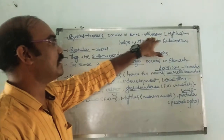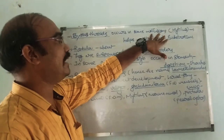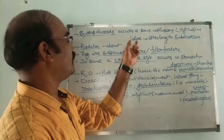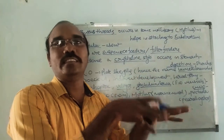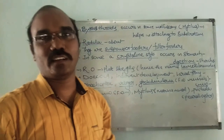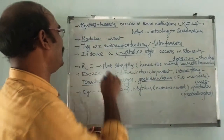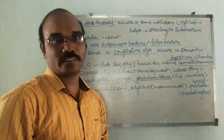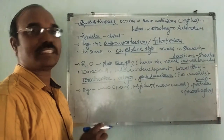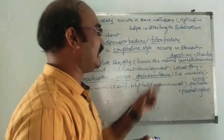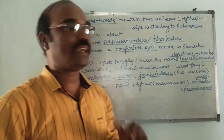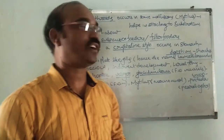Byssus threads occur in some molluscs, for example in Mytilus. Byssus threads enable the molluscs to attach to the substratum in marine water. Radula is absent in these organisms. They are suspension feeders or filter feeders. In some molluscs a crystalline style occurs in the stomach, which is used for the digestion of starches.